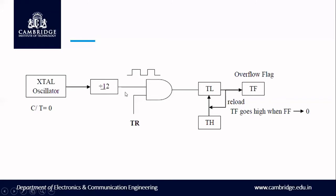You will get a timer frequency from the TMOD register setting. With this frequency, the timer counts every rising edge of the clock, incrementing TL. When TL rolls over, TF flag is set, and at the same time the TH value originally loaded is copied back into TL. This procedure repeats — that is why we call it the 8-bit auto reload mode.